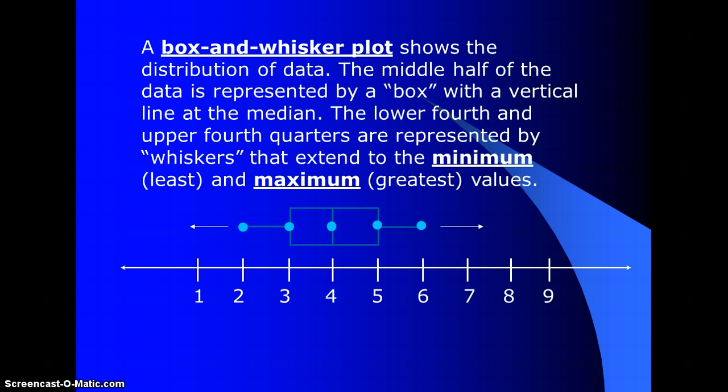A box and whisker plot shows a distribution of data. The middle half of the data is represented by a box with a vertical line at the median. The lower fourth and upper fourth quarters are represented by whiskers that extend to the minimum (least) and the maximum (greatest) values.